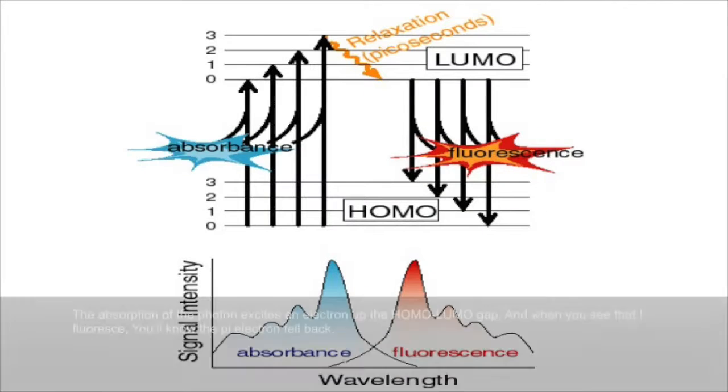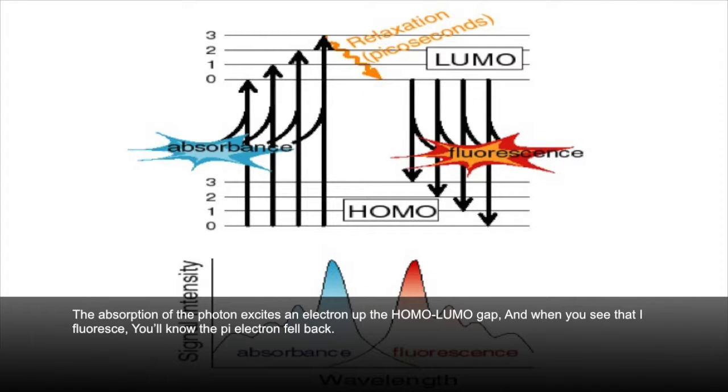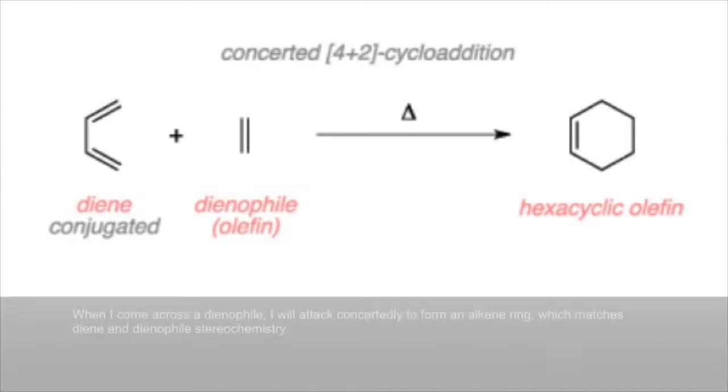An ethylene distortion of the photon excites an electron up the HOMO-LUMO gap. When you see that I fluoresce, you'll know the pi electron fell back.